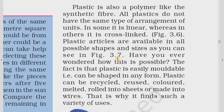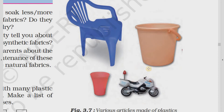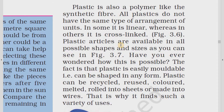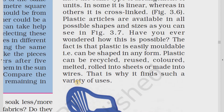Plastic articles are available in all possible shapes and sizes — you can see chairs, pieces of glass, and many other designs. It is easy to manufacture because plastic is easily moldable and can be shaped into any form. Plastic can be recycled, reused, colored, melted, rolled into sheets, or made into wires. That is why it finds such a variety of uses.